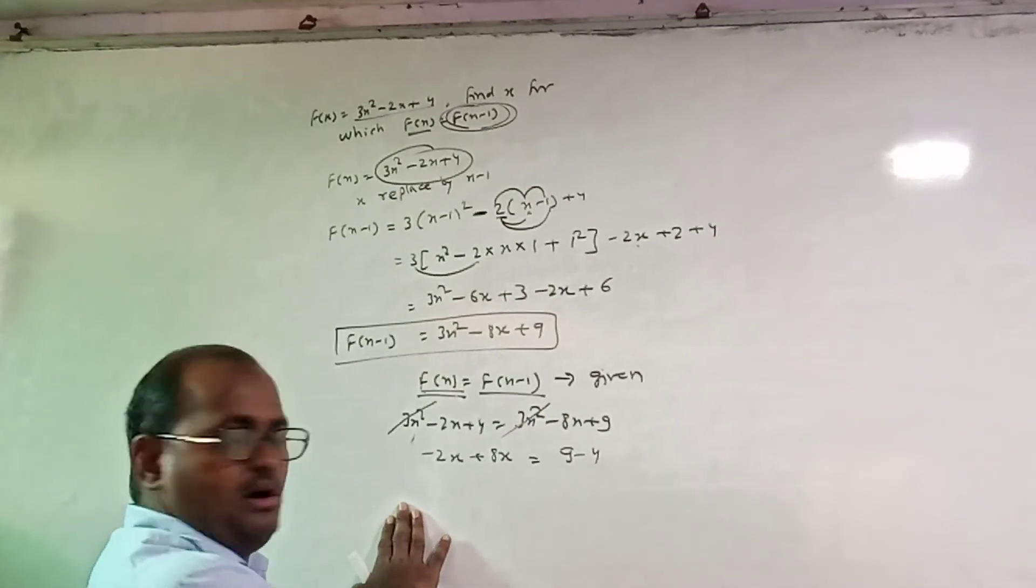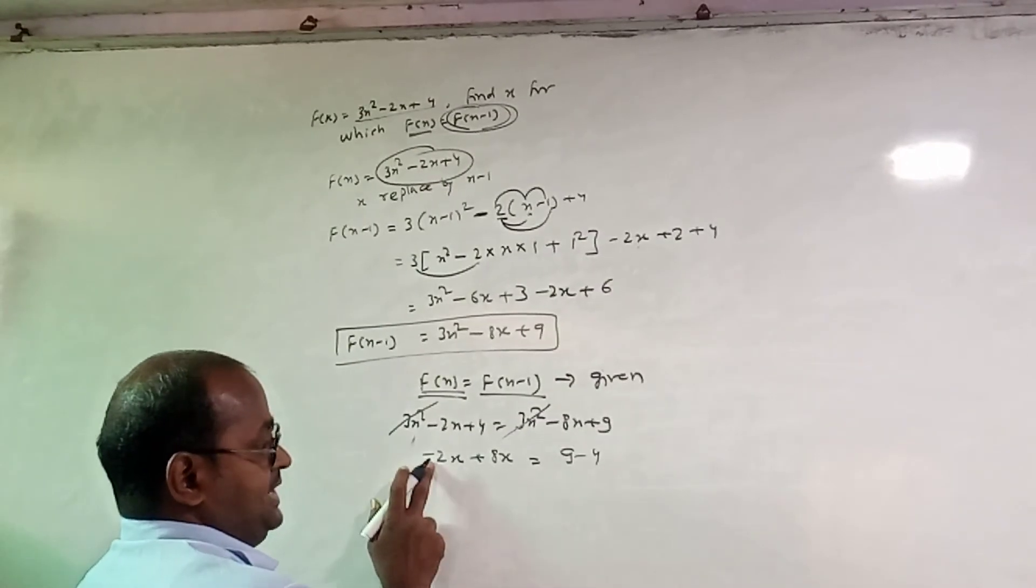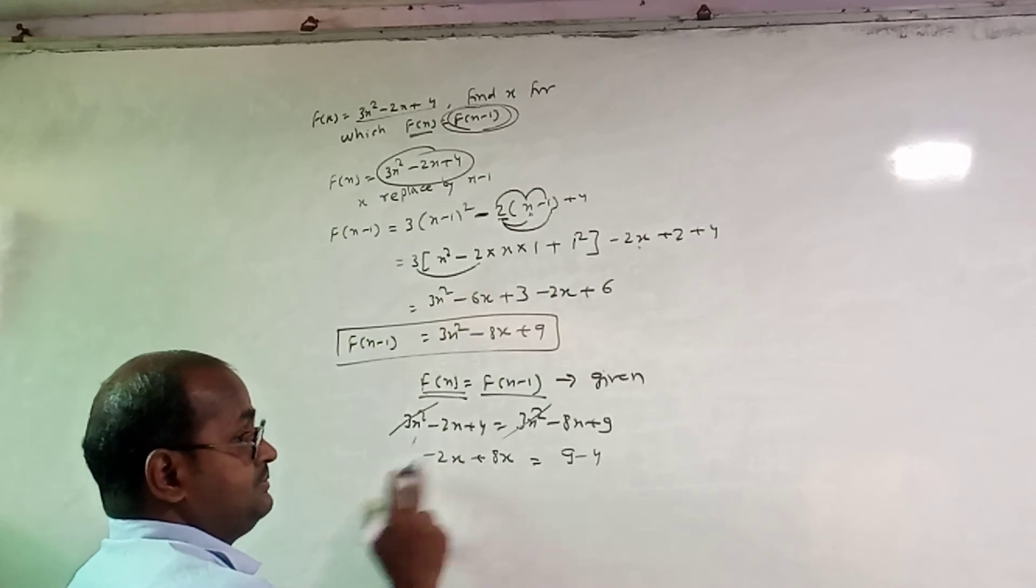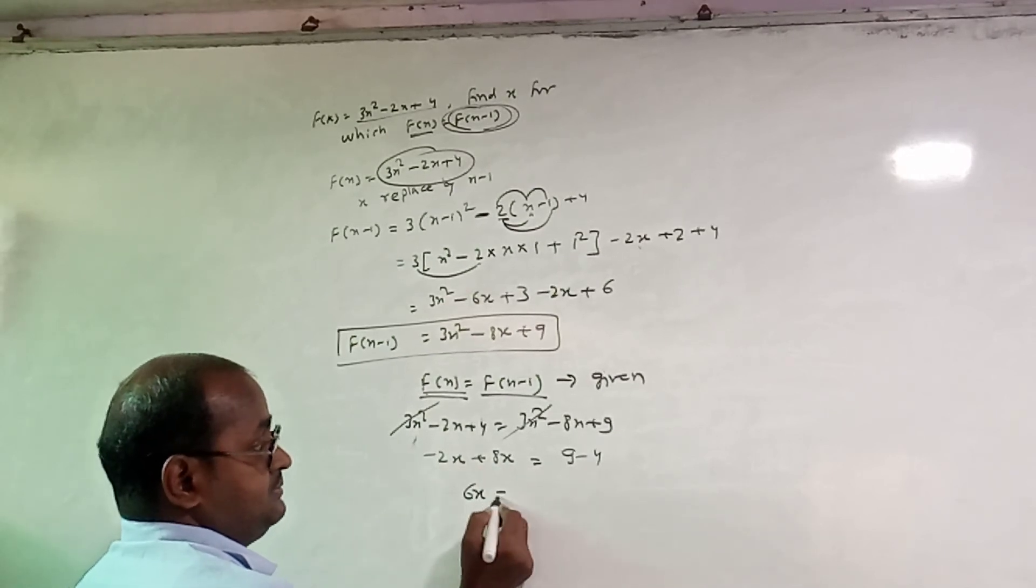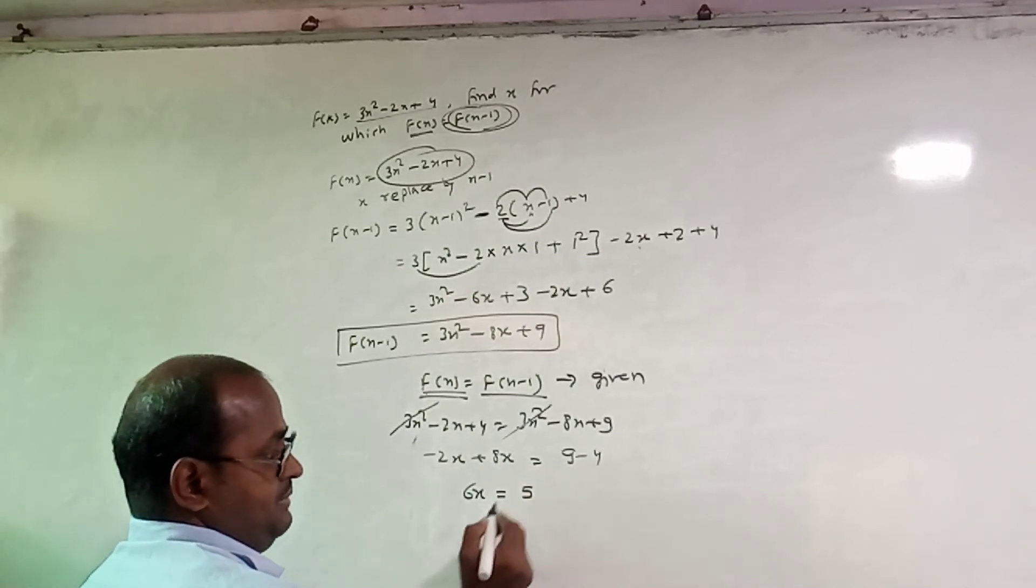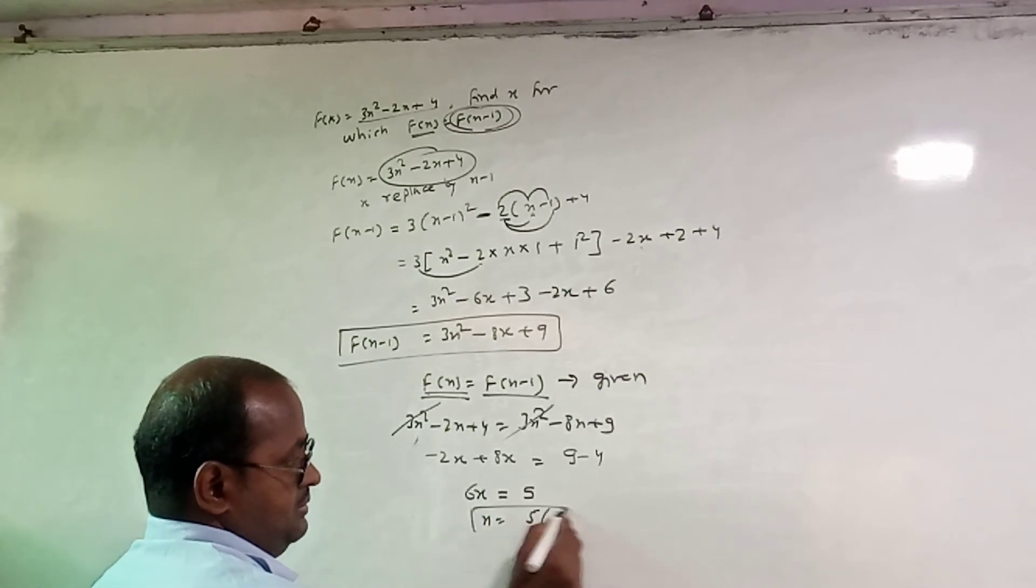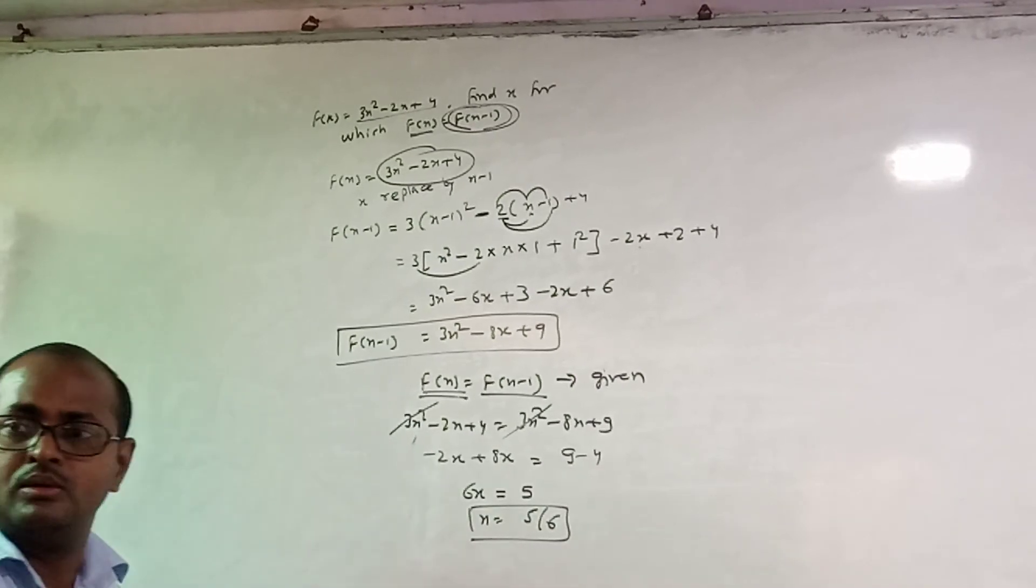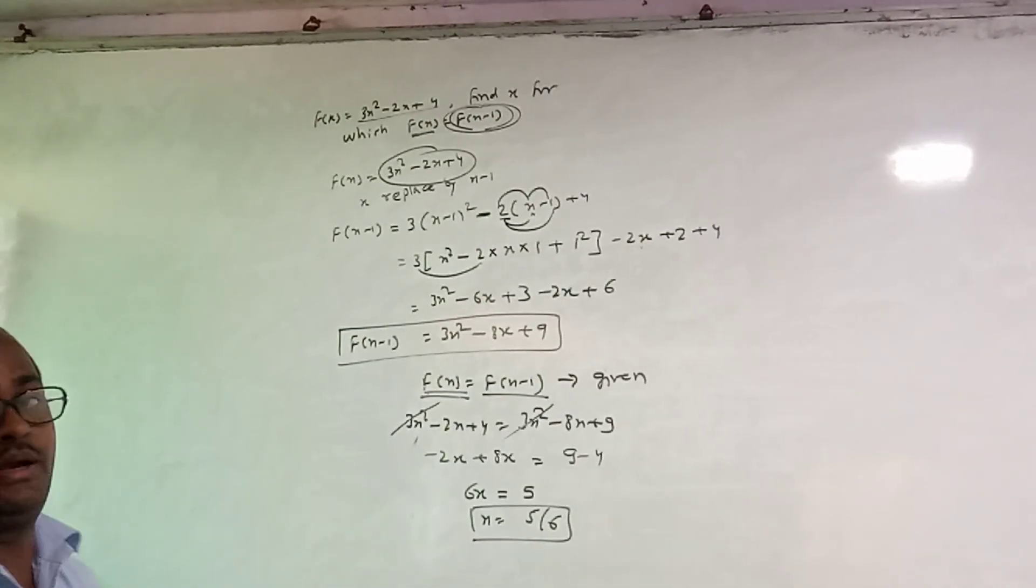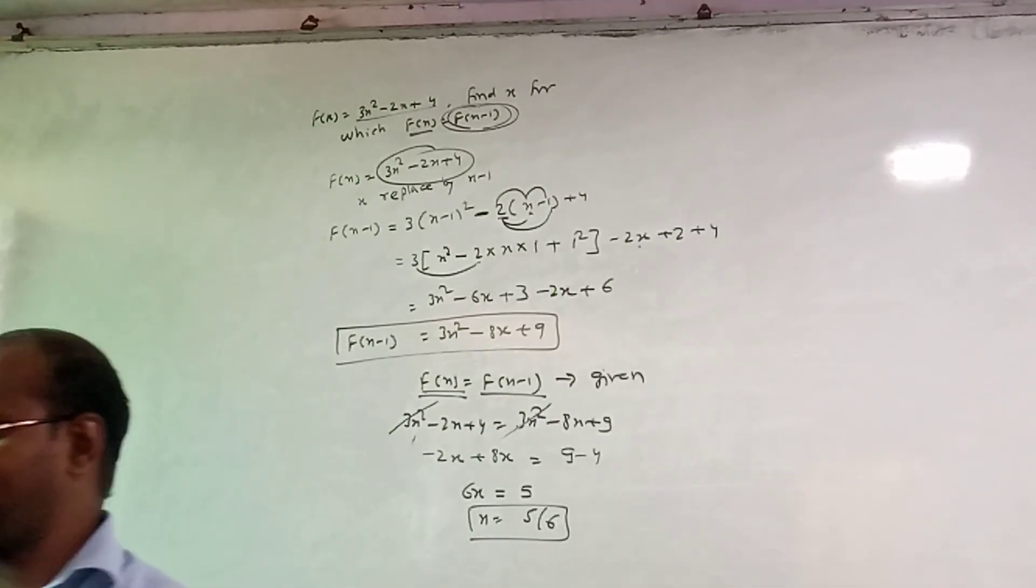Minus 2x plus 8x is 6x. So you get 5. x square, 5 upon.